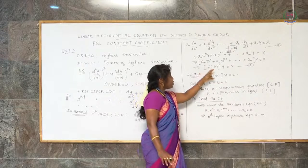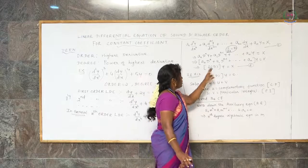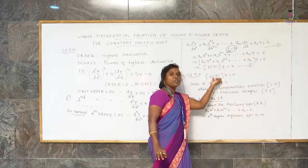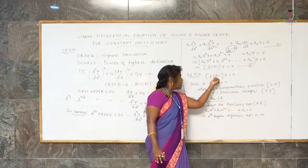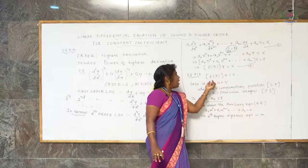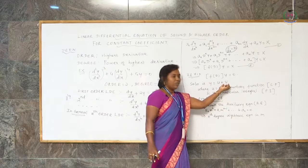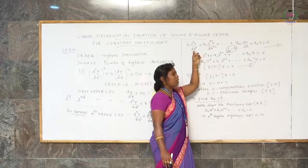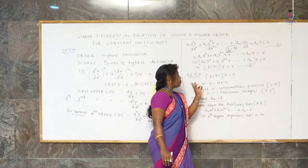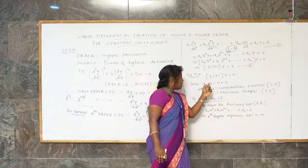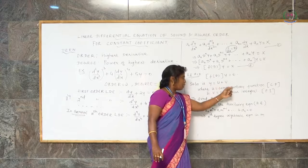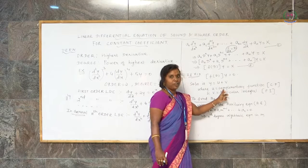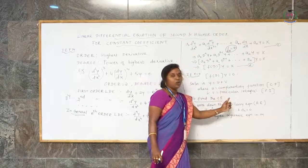To find the solution, we take the right-hand side to be 0, making the equation a homogeneous equation. The general solution is written as y equals u plus v, where y is the dependent variable depending on the independent variable x. Here u is the complementary function and v is the particular integral. The complementary function contains arbitrary constants, while the particular integral contains no constants.